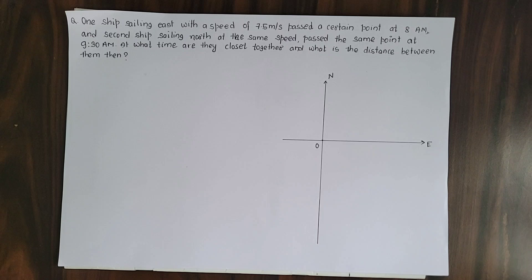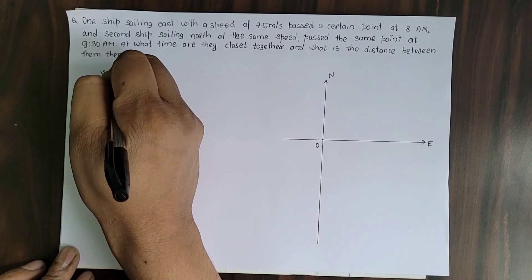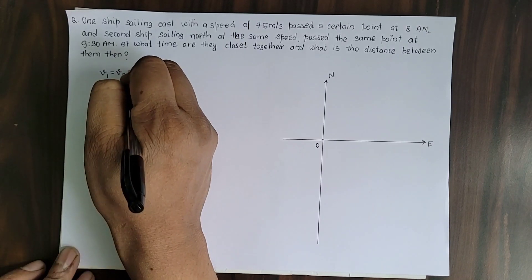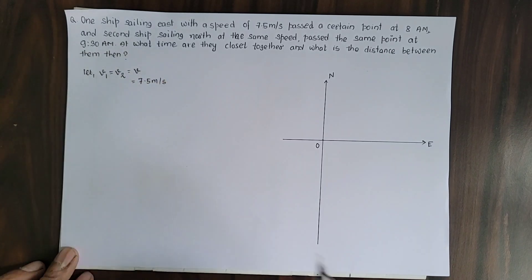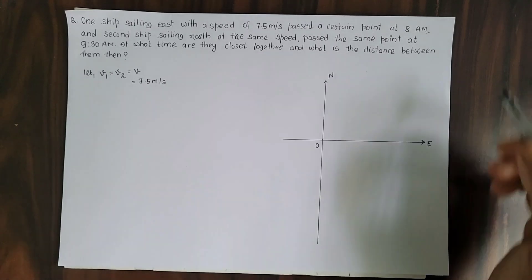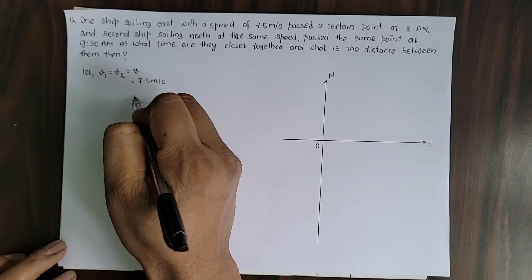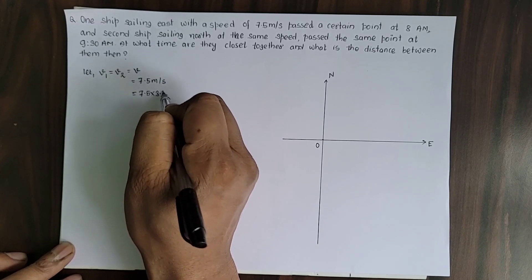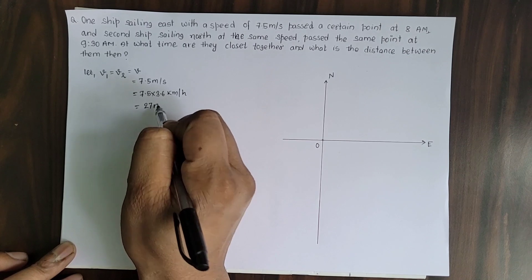We have two ships with the same speed. Let's call the speed of the first ship v1 and the second ship v2. Since v1 equals v2, we can just call it v, which equals 7.5 meters per second. But the question has time in hours, 8 AM and 9:30 AM, so we need to convert the speed to kilometers per hour. Multiplying by 3.6, we get 27 kilometers per hour.